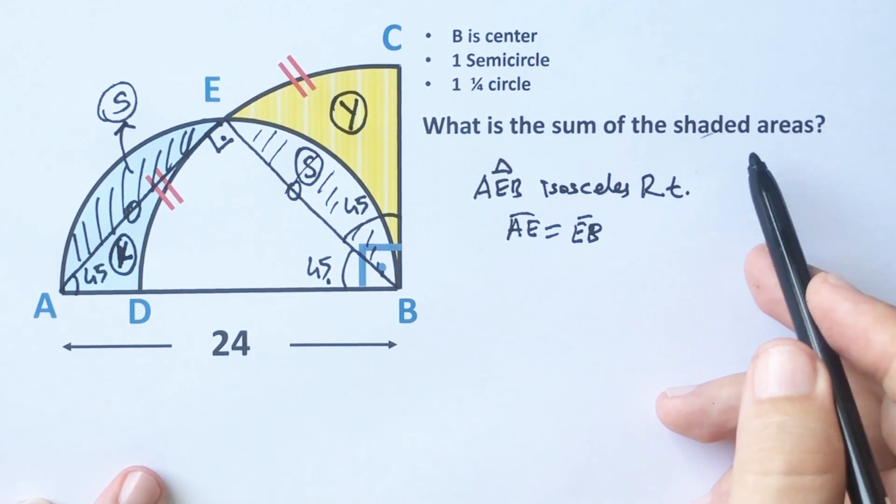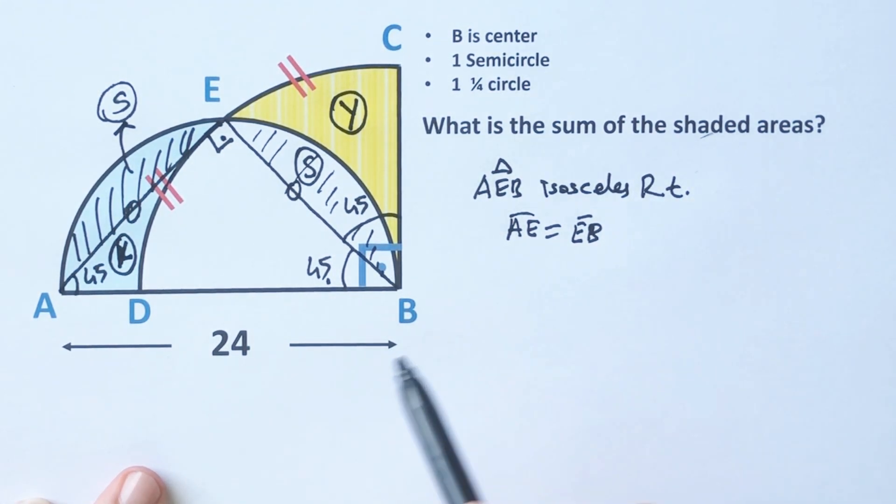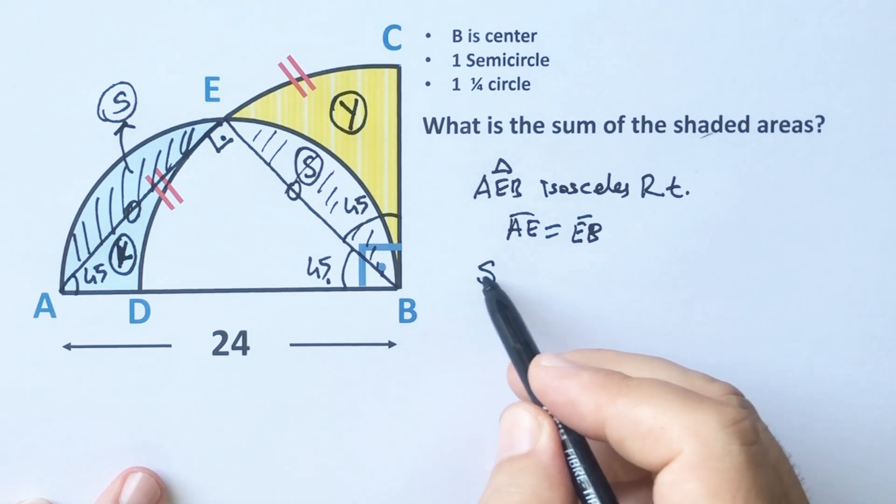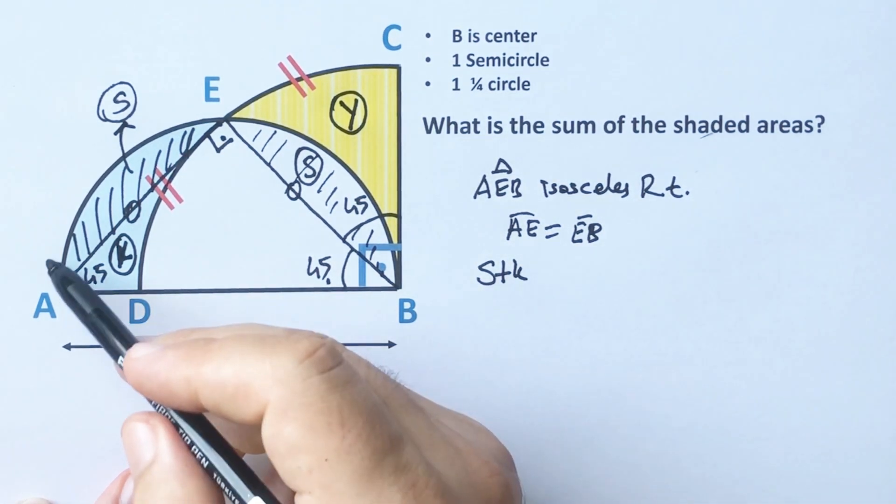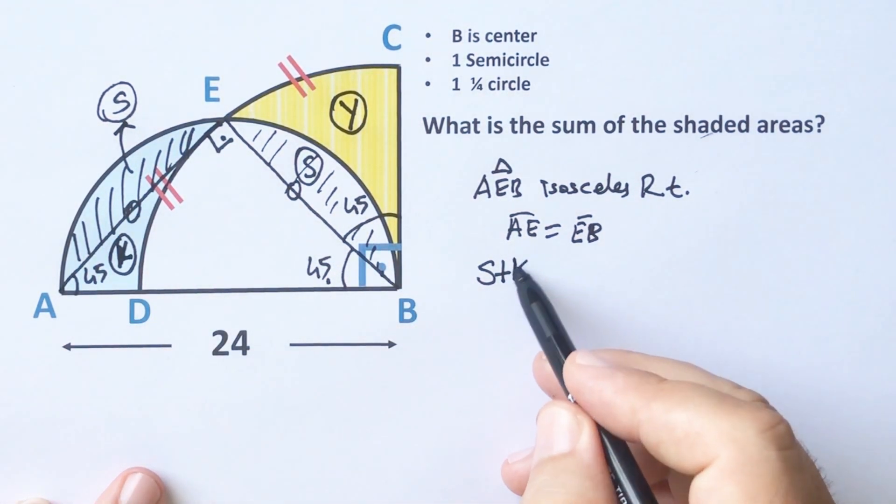The sum of the shaded areas are equal to S plus K plus Y, right?